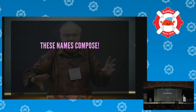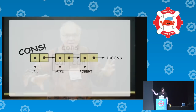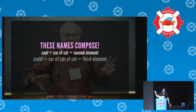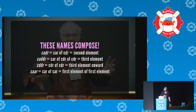But I love them because they actually compose. You have the cadr — the car of the cdr. The car is the first element of the list, the cdr is the rest, so the cadr is the second element. Then the caddr — car of the cdr of the cdr — is the third element. And the cddr — cdr of the cdr — is everything but the first and second elements. They had fun back in the day.